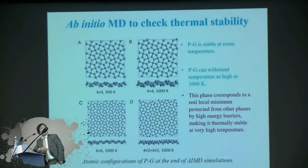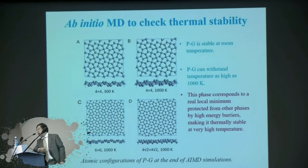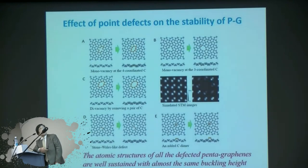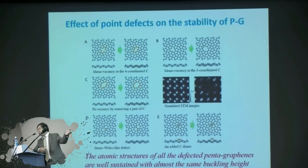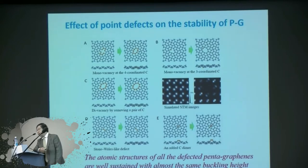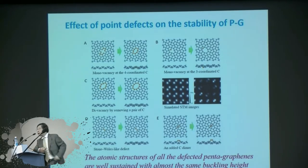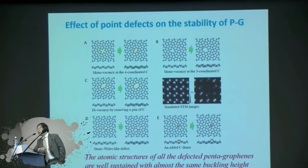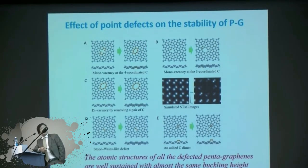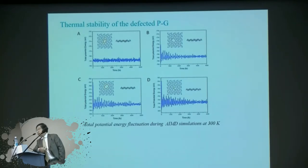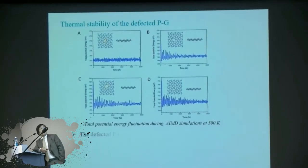We also checked the thermal stability using ab initio molecular dynamics. We confirmed that up to 1000 Kelvin it is stable. And even if it has a defect — because experimentally, completely perfect pentagraphene like hexagonal graphene is difficult to achieve — we checked the defected pentagraphene. They are also stable up to 1000 Kelvin and even at room temperature, 300 Kelvin. Up to very high temperature it is stable.